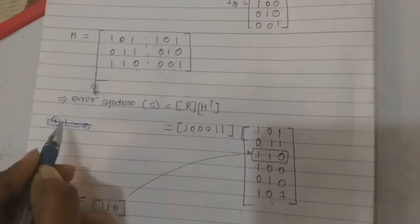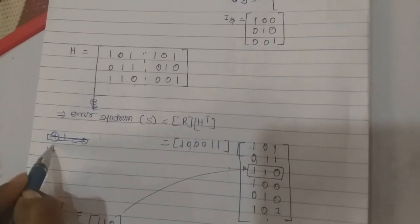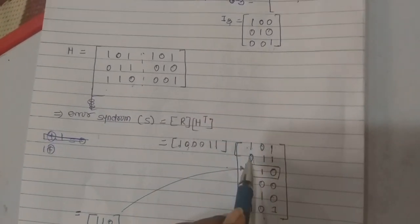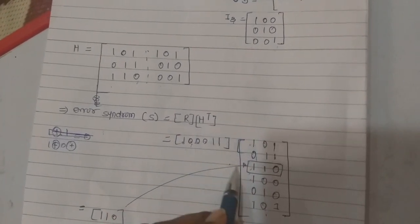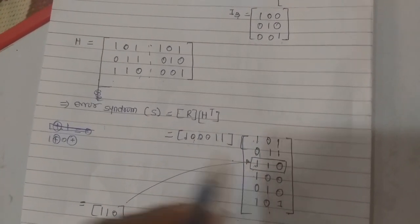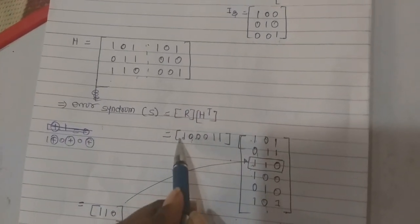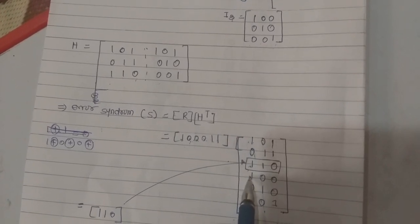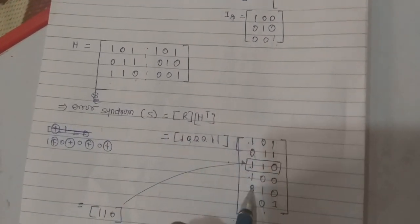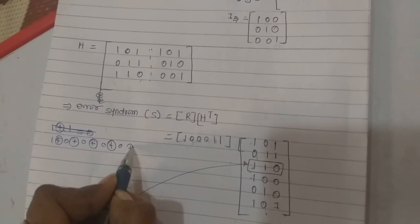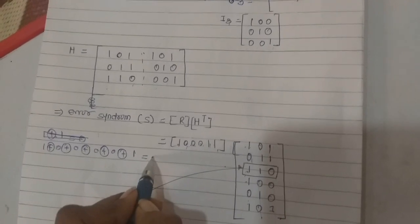0 XOR with 1 multiplied by 0, 0 XOR with 1 multiplied by 0, 0 XOR with 1 multiplied by 1, 1 multiplied by 1. So 1. You will get 0 here.